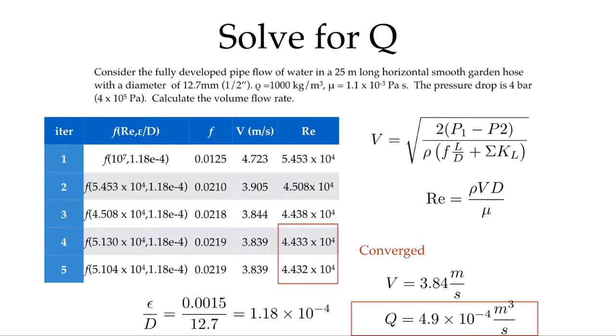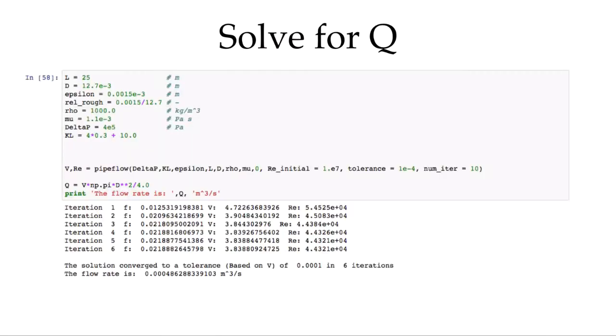So a significant decrease in that flow rate when the pressure is held fixed and we add additional losses because of these elbows and the gate valve and a little bit of extra friction in the pipe because of the roughness.